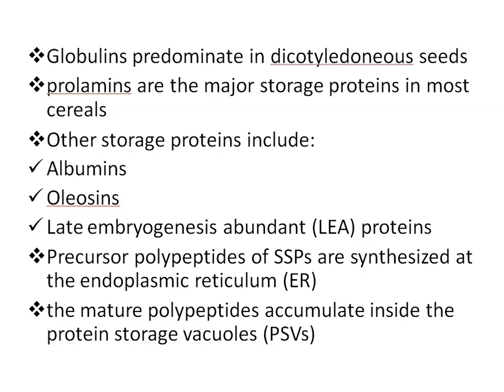Albumins are proteins soluble in salt solution. Prolamines, also known as zein, are the main storage proteins in maize seeds, accounting for about 60% of the total storage proteins. Oleosins are small hydrophobic proteins associated with oil bodies. LEA proteins are highly hydrophilic and are thought to play a role in desiccation tolerance. Precursor forms of these storage protein classes are synthesized at the endoplasmic reticulum, and the mature polypeptides accumulate inside specialized vacuoles and bodies called protein storage vacuoles and protein bodies.